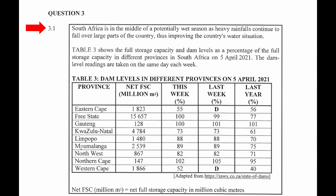South Africa is in the middle of a potentially wet season as heavy rainfalls continue to fall over large parts of the country, thus improving the country's water situation. Table 3 shows the full storage capacity and dam levels as a percentage of the full storage capacity in different provinces in South Africa on the 5th of April 2021. The dam level readings are taken on the same day each week.